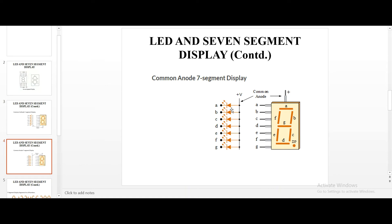Next comes the common anode 7 segment display. The usual practice is using common anode 7 segment display where all the anodes will be connected to 5V and the cathodes will be, signals will be sent to the cathodes.